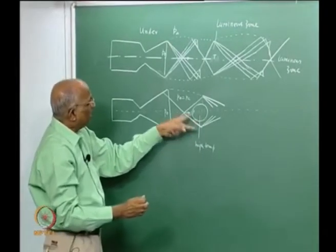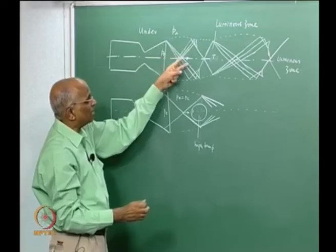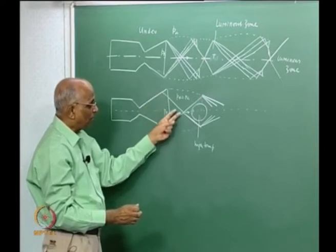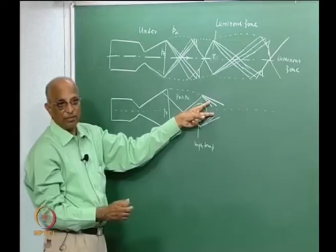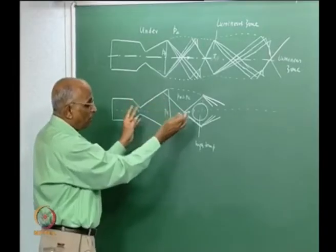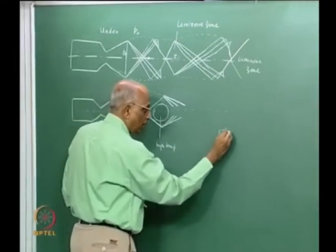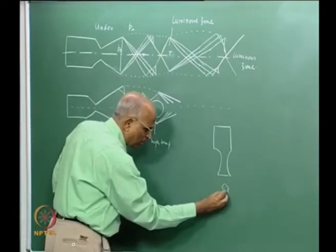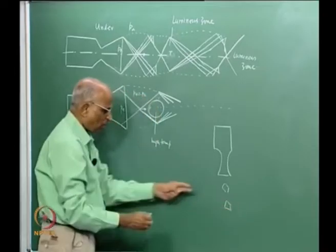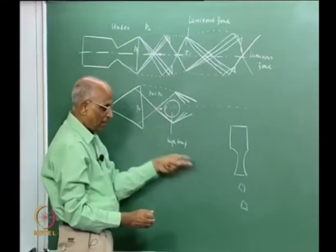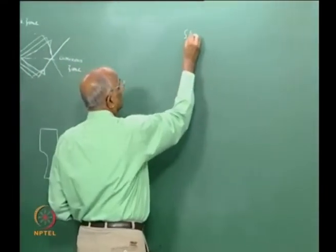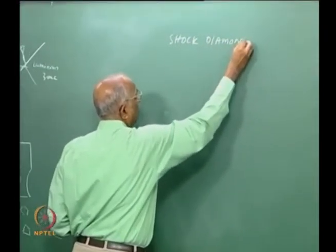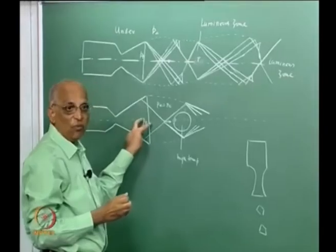Therefore, what is happening? In an under-expanded nozzle, I have a set of initial rarefaction fans followed by oblique shock waves. In the case of an over-expanded nozzle, I have oblique shock waves which thereafter result in the expansion fan. Therefore there is a distinct change in the plume if I consider a rocket moving up. These bright spots are due to the shock wave and are known as shock diamonds. I get this both for under-expanded flow as well as over-expanded flow.